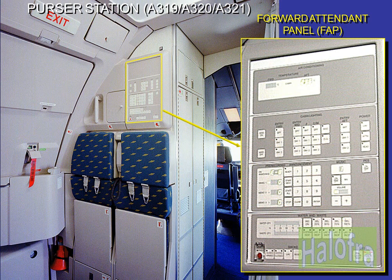The PERSA station is equipped with the forward attendant panel, FAP. It is divided into four parts: the air conditioning panel (optional), the light panel, the audio panel, and the water and miscellaneous panel.